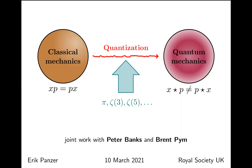The main idea is that in quantization in general, you start with a classical system — classical mechanics for example — and you want to quantize it. One way to phrase this that is pretty much universal is looking at the algebra of observables. In classical mechanics, observables like positions and momenta of particles are just functions you can measure, and they commute.